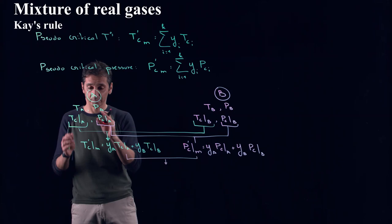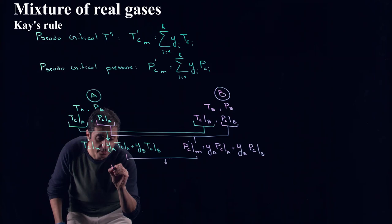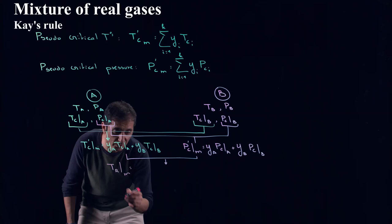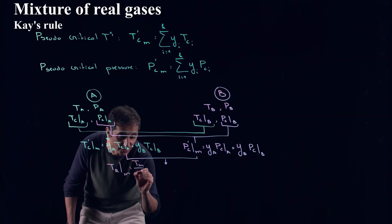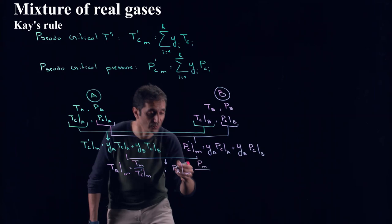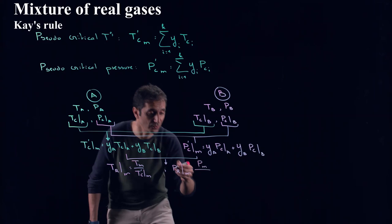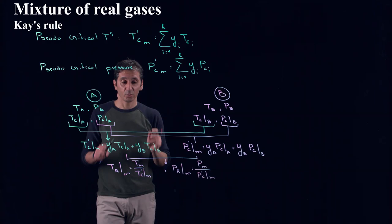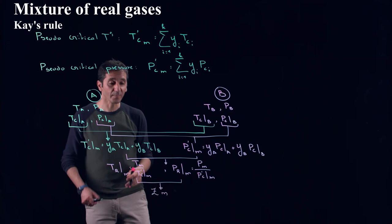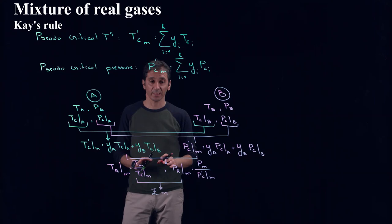So now what we can do, we have the new pseudocritical temperature and pressure for the mixture. So now we can calculate the reduced temperature for our mixture which is equal to the temperature of our mixture over the pseudocritical temperature of our mixture. And our reduced pressure of the mixture is equal to the actual pressure of our mixture over the pseudocritical pressure of the mixture. So here we have the two ingredients to use our compressibility chart. From here we get the value of ZM that we can plug in our equation. We have to understand two things.